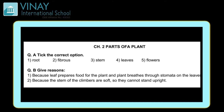Now let's move to Question B: give reasons. Ismei humein reason batana hai ki jo humein statement diya hai uska reason kya hai. First one: the leaf is an important part of the shoot. Chute kya hai? Jo plant hota hai uska zameen se upar wala hissah shoot hai, aur zameen ke neiche wala hissah root hai.